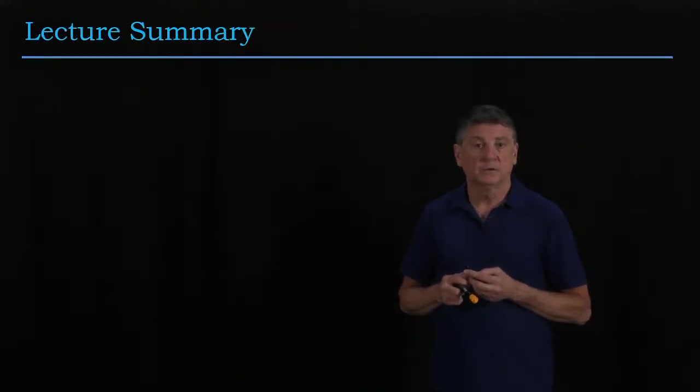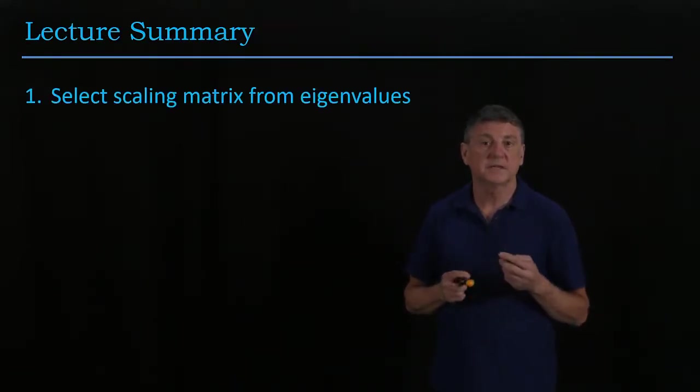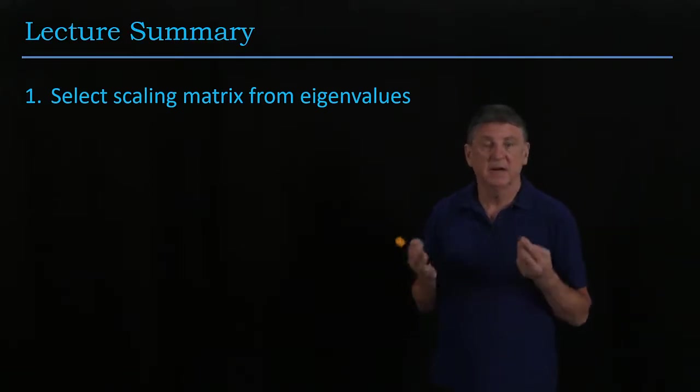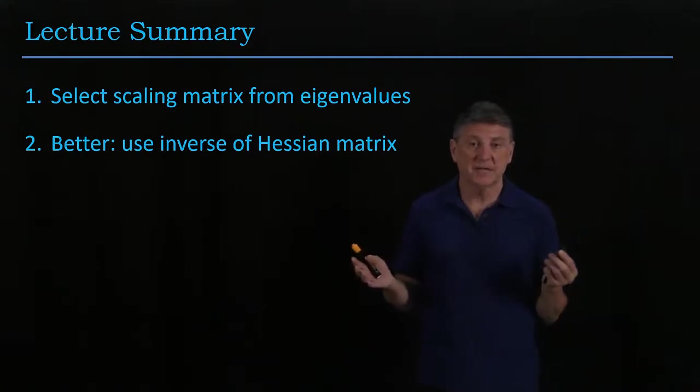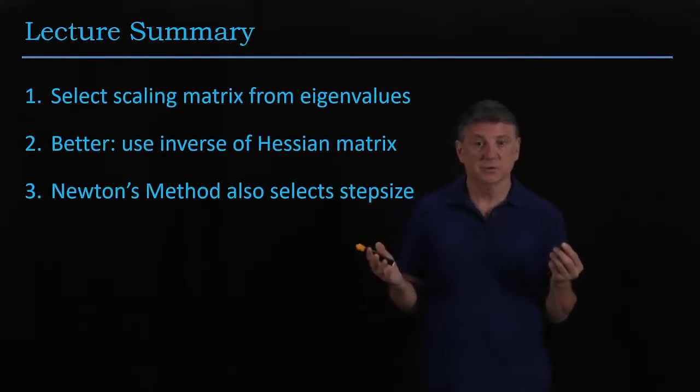So what have we learned? We can select the scaling matrix by hand if we take a look at the eigenvalues of the Hessian. Better is to use the inverse of the Hessian matrix. That's called Newton's method.